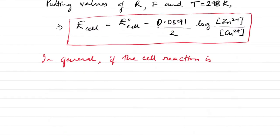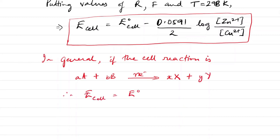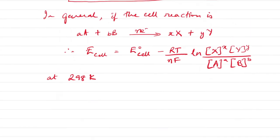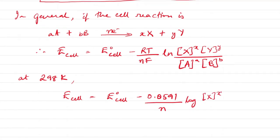In general, if the cell reaction is written in a standard form and we apply the Nernst equation, we get a general relation. At 298 Kelvin (25°C), the Nernst equation for any reaction can be written in this form, where n is the number of electrons involved in the cell reaction.